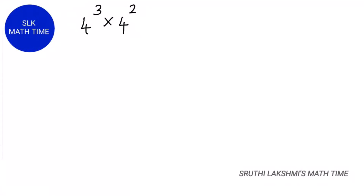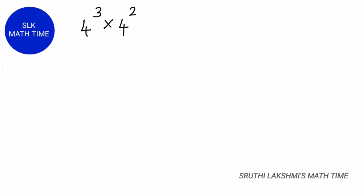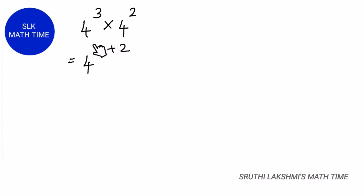Let's see another example: 4 power 3 into 4 power 2. Here the common base is 4. We write 4, then add the exponents: 3 plus 2 equals 5. So it's 4 power 5.